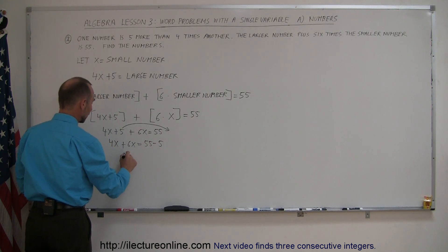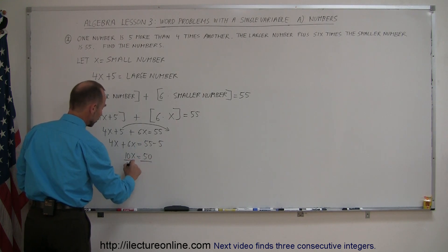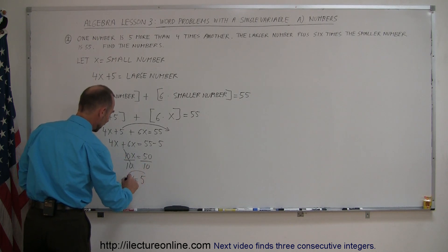And so we can end up with 10x equals 50, and then we divide both sides of the equation by the numerical coefficient of the x. The tens cancel out, and we have x equals 50 divided by 10, which is 5.